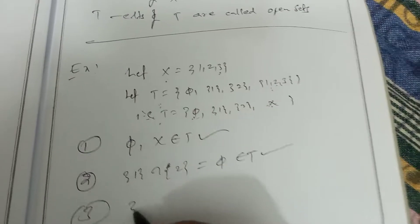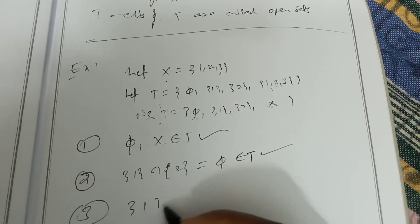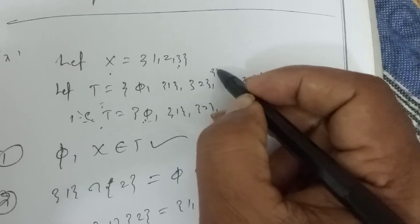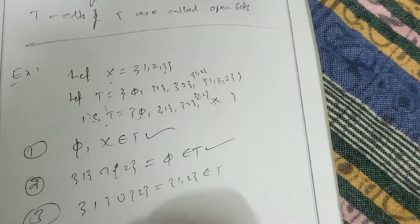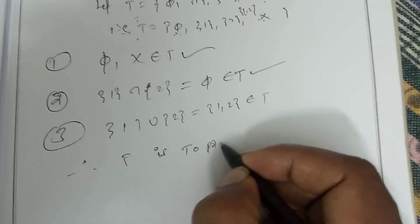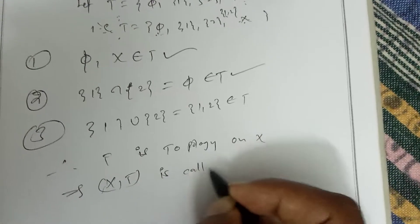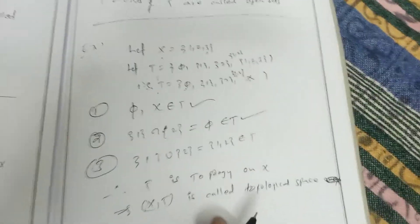Third condition: {1} union {2} = {1,2}, which belongs to T. So {1,2} belongs to T. Therefore T is a topology on X, and (X, T) is called a topological space.